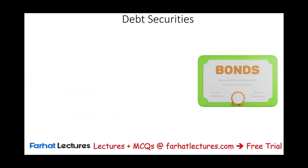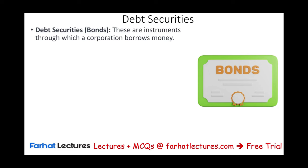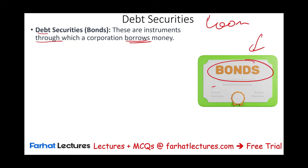Starting with debt securities — instruments through which the company borrows money. You could also get a loan, which is a form of borrowing. We are going to be discussing bonds specifically. A bond is when a company issues a piece of paper promising to pay the money back plus interest. So if the company wants to borrow $100 million, they will issue bonds of $100 million and have to pay some sort of interest on that bond. There are various types of bonds.